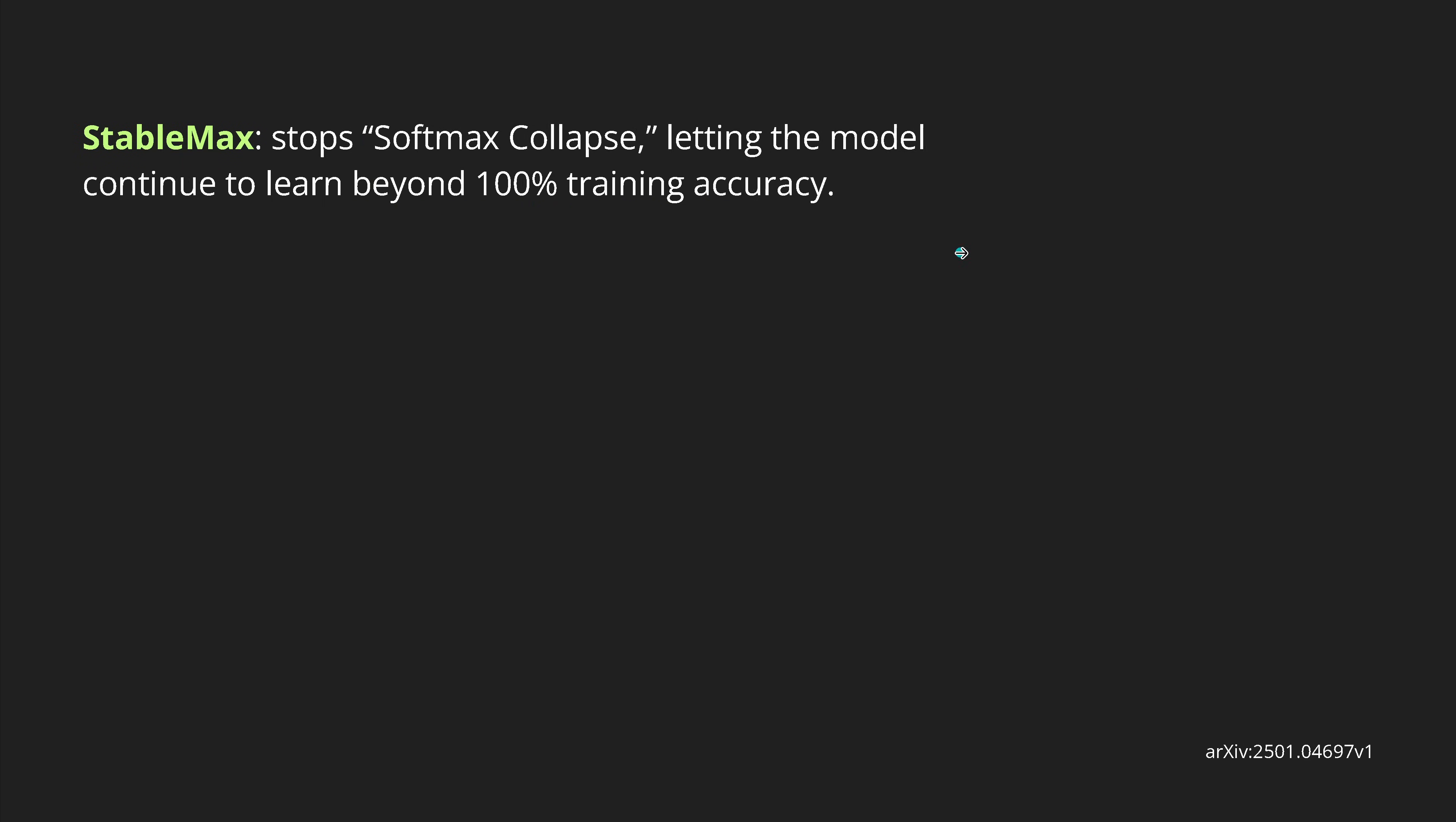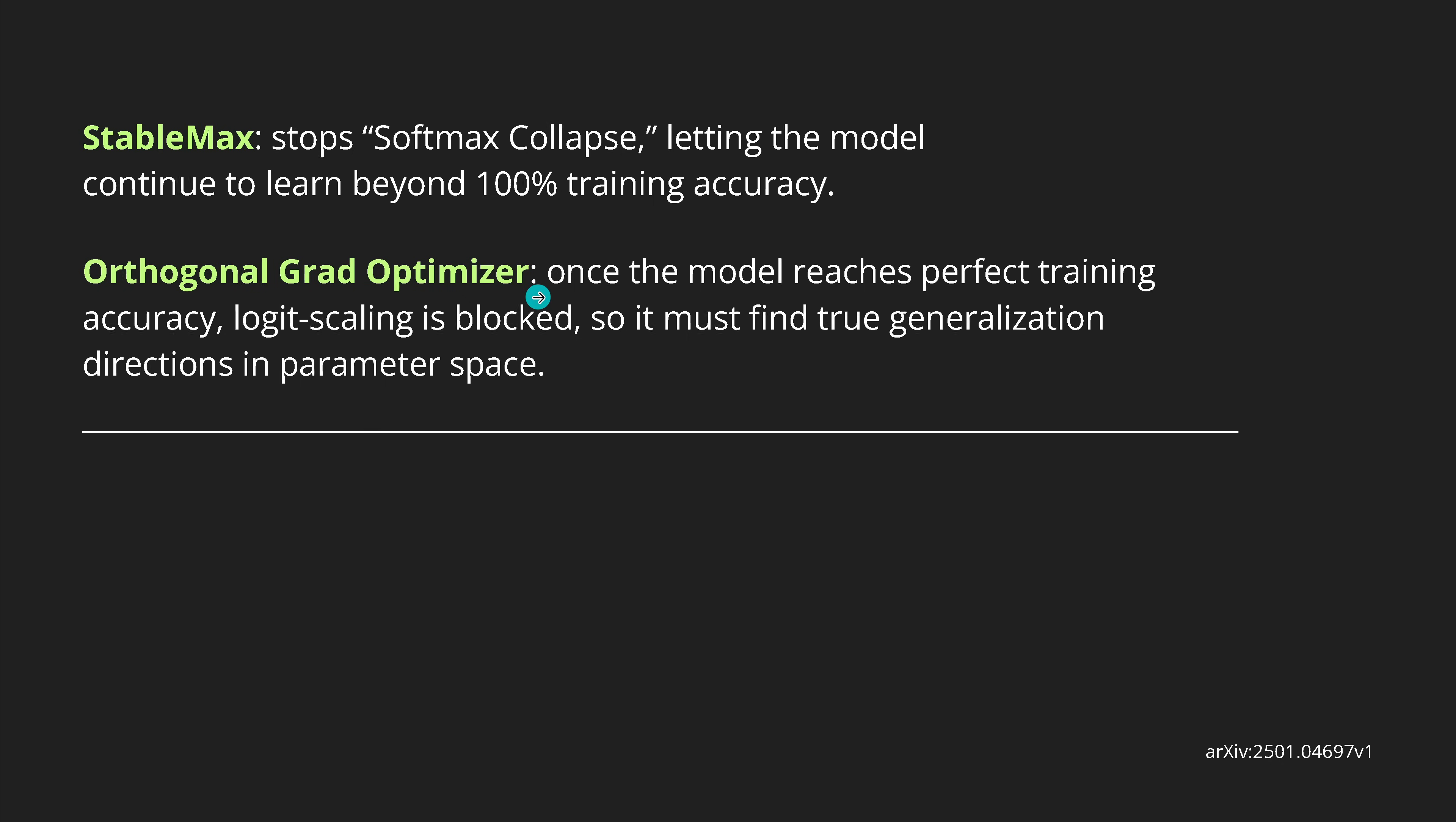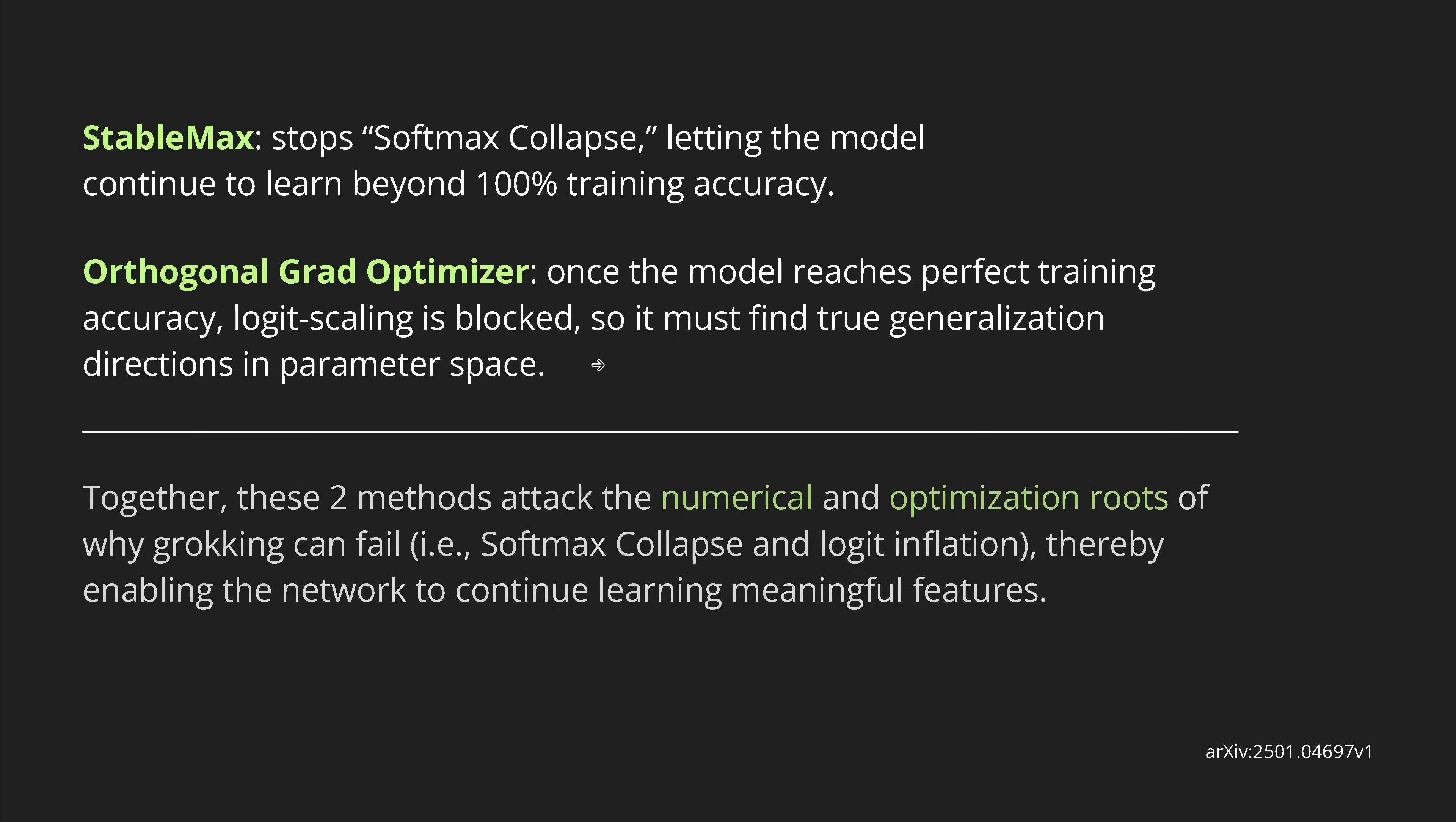So, here we are. At the end of the video, we have now the summary. Welcome. So, what we have. First element, as I told you, it's called stable max, instead of soft max here. It simply has the effect, it stops here our soft max collapse that we have here in the classical LLM, letting the LLM continue to learn here beyond the classical training accuracy on only the training dataset. And then, second part is the orthogonal grad optimizer. So, once the model reaches here the perfect training accuracy, the logit scaling is now blocked. So, the system is now in its optimization mathematical procedure that it is executing. It must now find some, if you want, true generalization direction in the parameter space and not scale the logits. This is it. This is simple, beautiful, amazing. And together, these two methods attack here the numerical and the optimization roots of why grokking can fail.